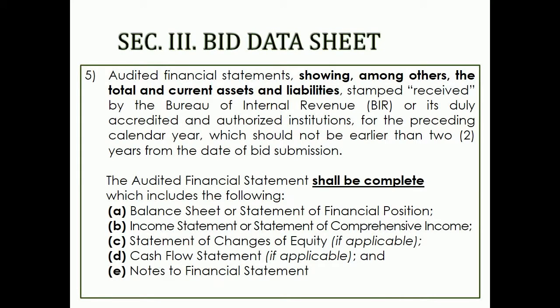5. Audited financial statements showing, among others, the total and current assets and liabilities, stamped received by the Bureau of Internal Revenue or its duly accredited and authorized institutions, for the preceding calendar year, which should not be earlier than two years from the date of bid submission. 6. The audited financial statement shall be complete, which includes the following: a. Balance sheet or statement of financial position; b. Income statement or statement of comprehensive income; c. Statement of changes of equity, if applicable; d. Cash flow statement, if applicable; and e. Notes to financial statement.